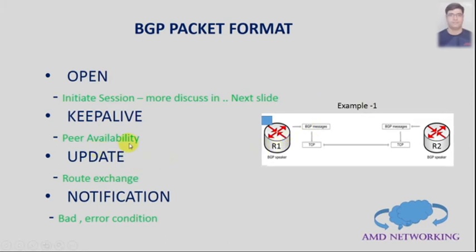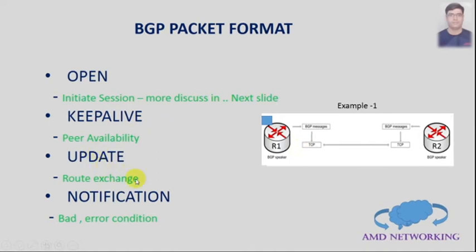The Keepalive message is the mechanism to check whether the peer is up or down. After that, Router 1 sends an Update message to Router 2, and Router 2 sends an Update message back, exchanging their routes between peers. If BGP encounters any error, it sends a Notification message to the peer, and the peer similarly sends a Notification message back when it encounters an error.